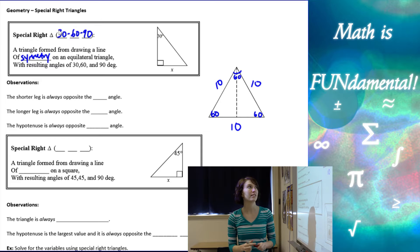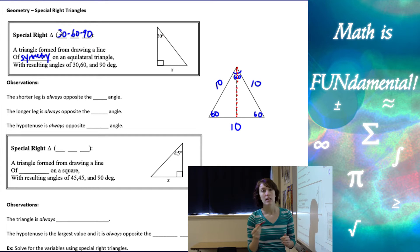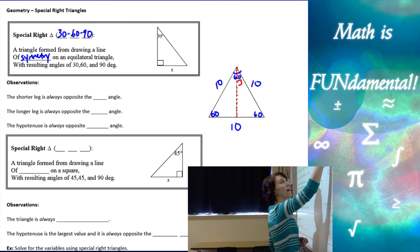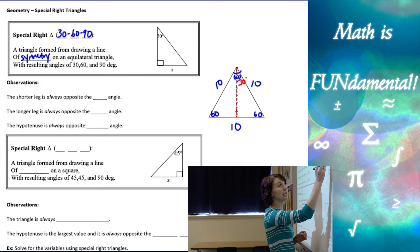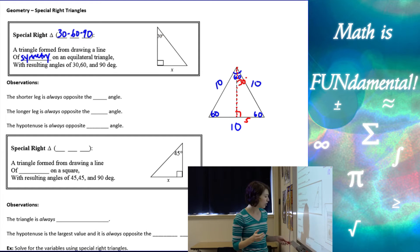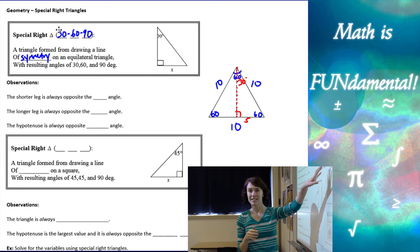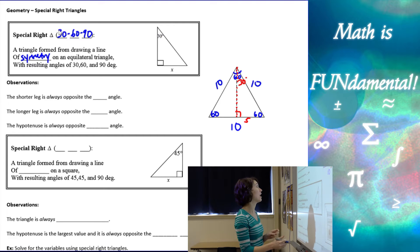If I take a line of symmetry down in an equilateral triangle, you notice it splits a couple things in half. It splits that top angle in half, making that 30 degrees, but it also splits this bottom side in half, making that 5. So if we look at our 30-60-90 special right triangle, that bottom side next to the 60 degrees is going to be half of the hypotenuse, and it's going to be like that every single time.